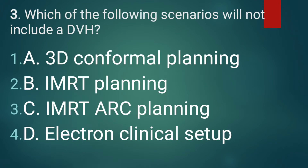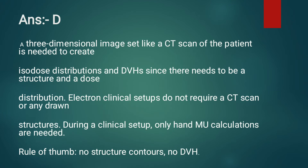Question 3: Which of the following scenarios will not include a DVH? The correct answer is option D, electron clinical setup. A 3D image set like a CT scan is needed to create isodose curve distributions and DVH, along with defined structures. Electron clinical setups do not require a CT scan or any drawn structures — only hand MU calculations are needed. The rule of thumb is: no structural contours, no DVH.